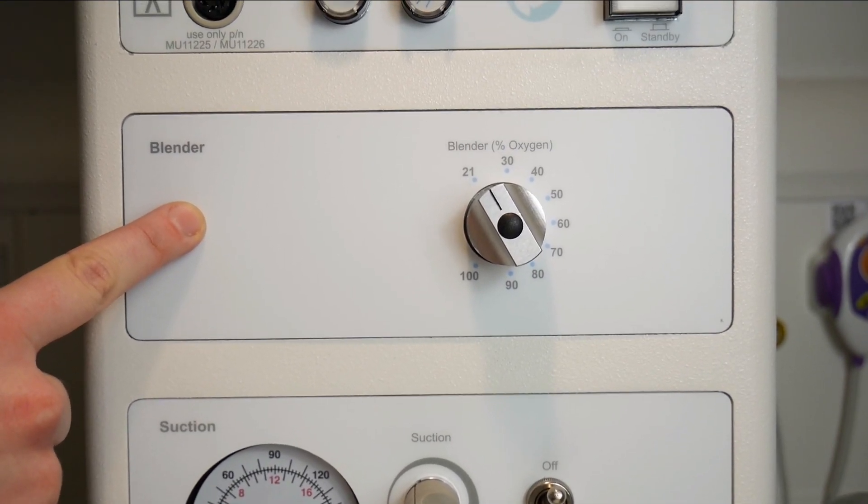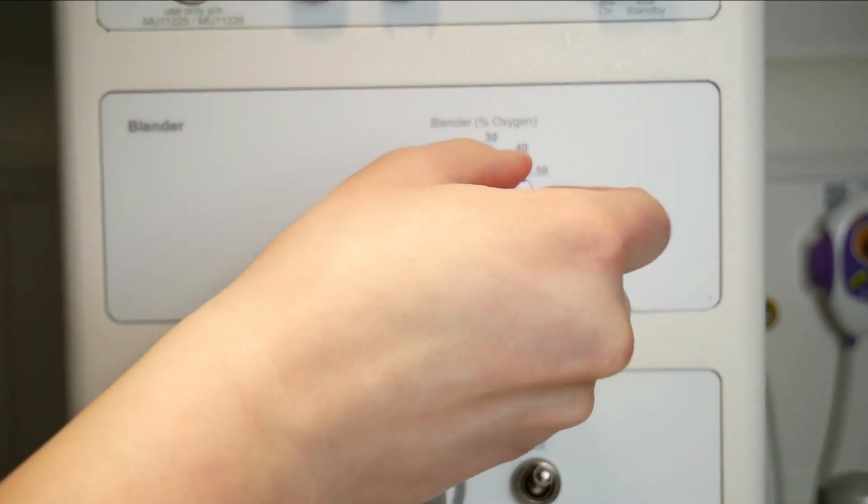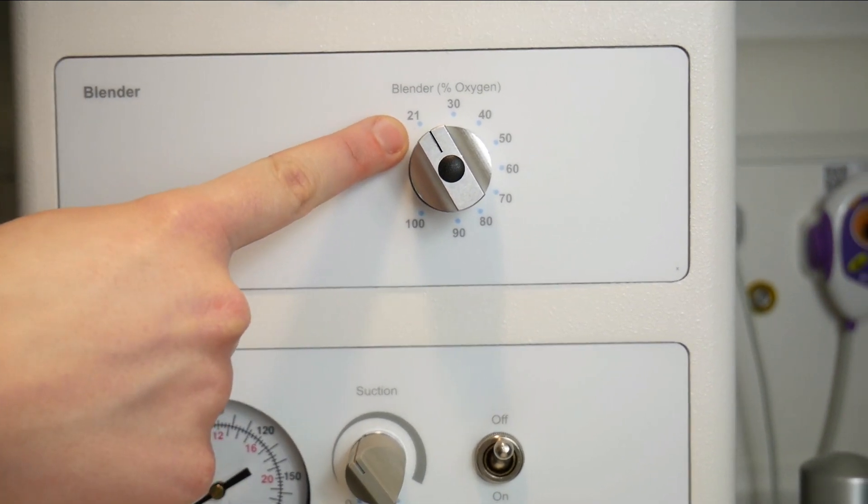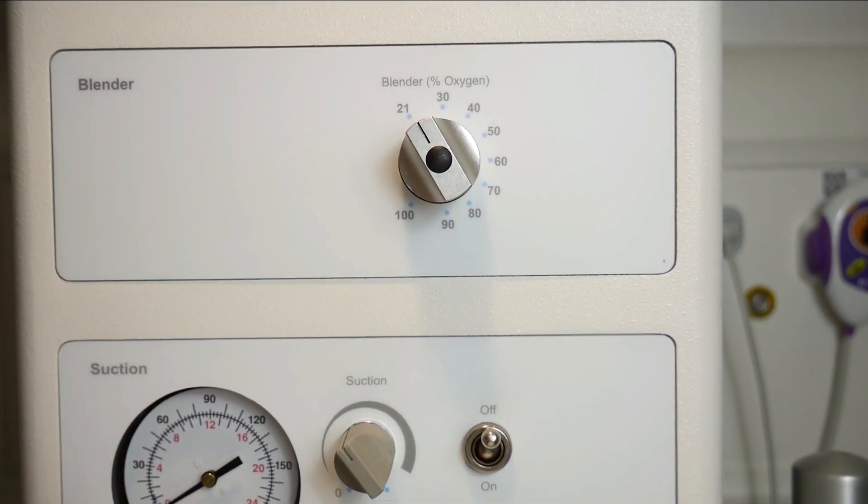This blender corresponds to the FiO2 of the gas coming out of the auxiliary gas port that you'll see in a moment. You can dial it up or down. Most people set the initial FiO2 as 21 so that you're resuscitating on air.